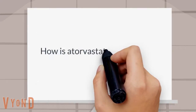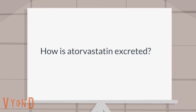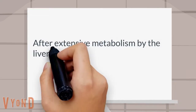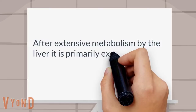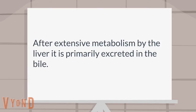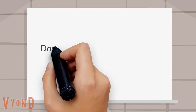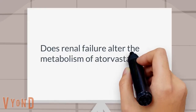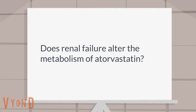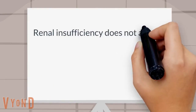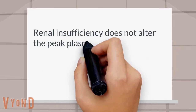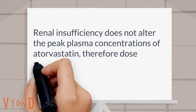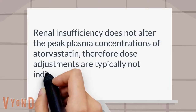How is atorvastatin excreted? After extensive metabolism by the liver, it is primarily excreted in the bile. Does renal failure alter the metabolism of atorvastatin? Renal insufficiency does not alter the peak plasma concentrations of atorvastatin, therefore dose adjustments are typically not indicated.